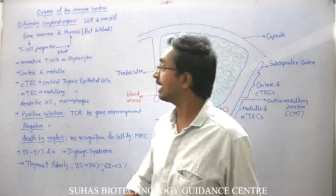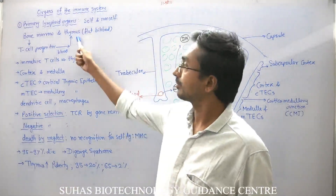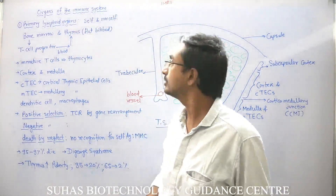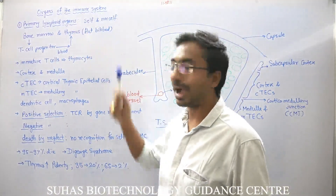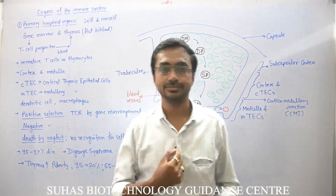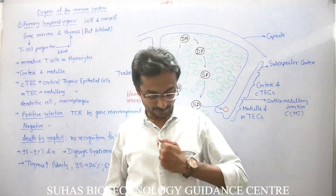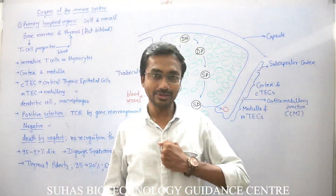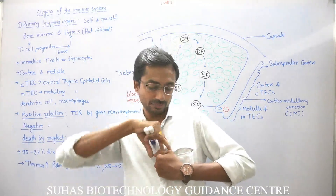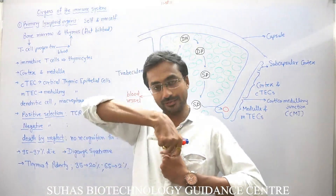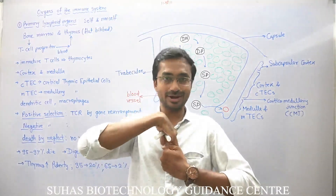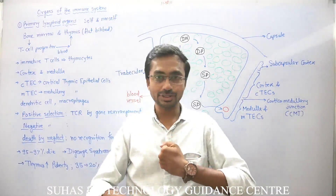Thymus is another primary lymphoid organ and it's a flat and bilobed organ present in the chest cavity. Suppose at this position there is heart and exactly from the back side of the heart, the Aorta will originate and will go from the back side of the heart in the downward direction.